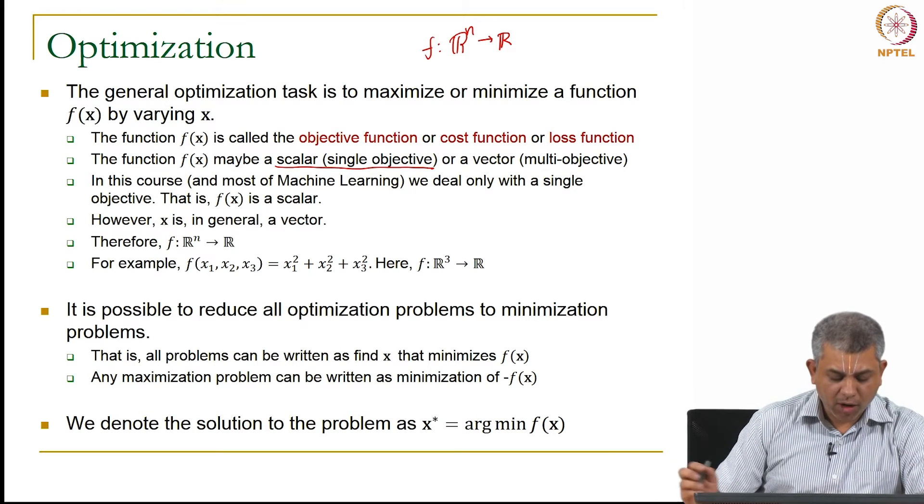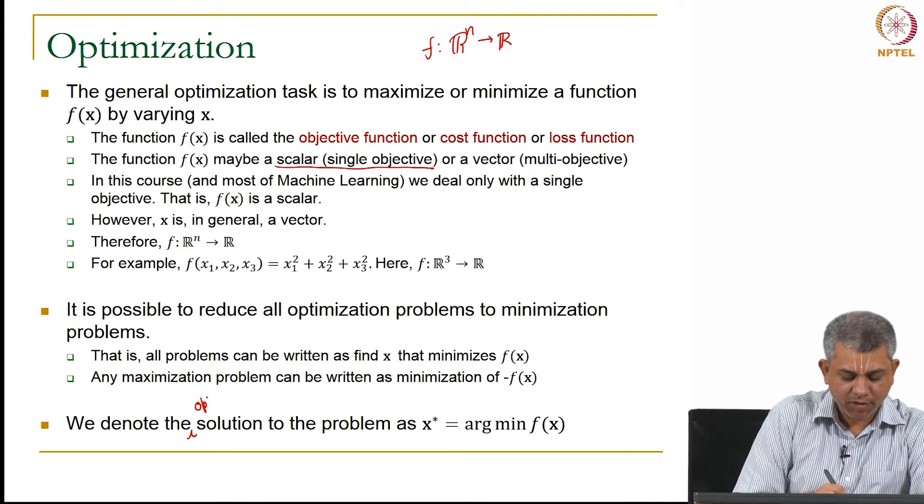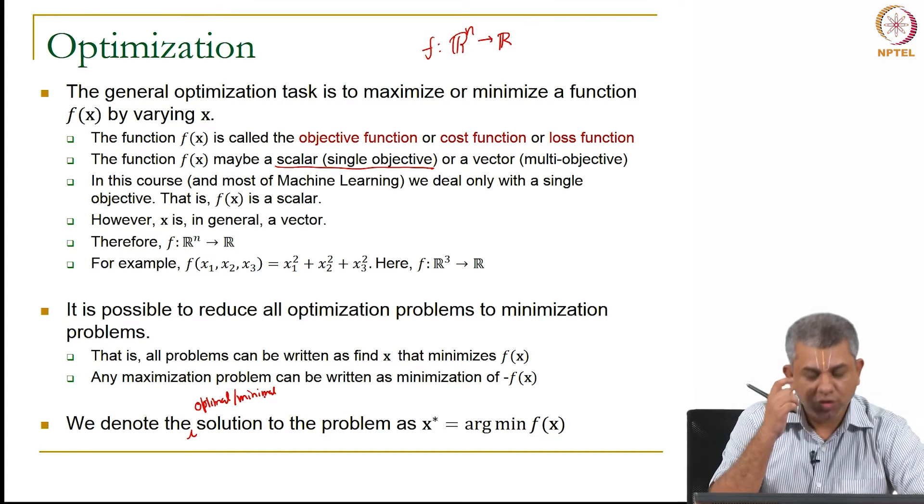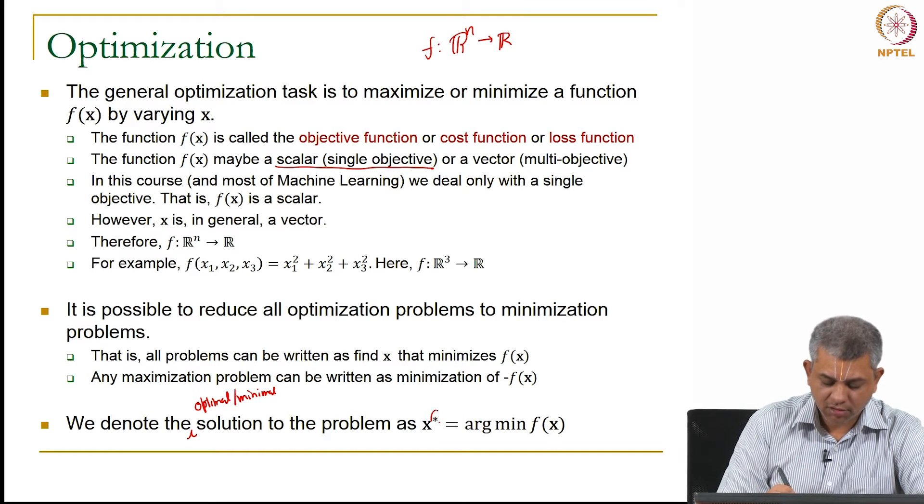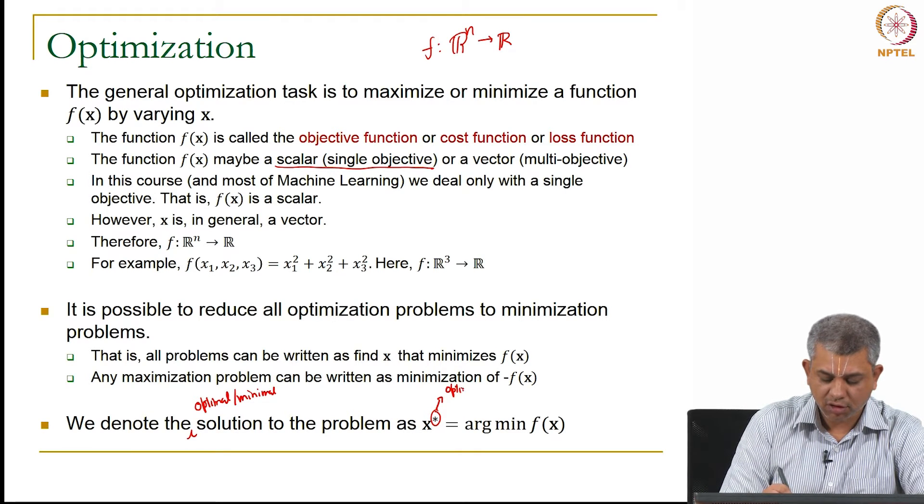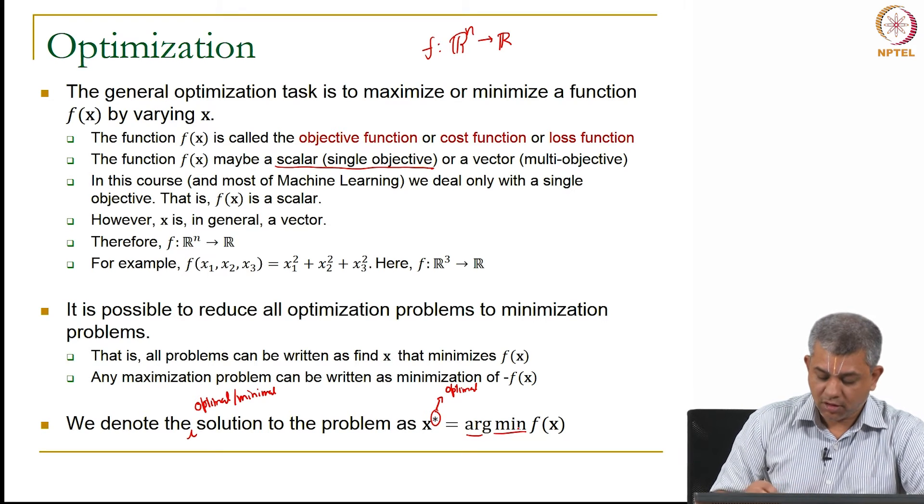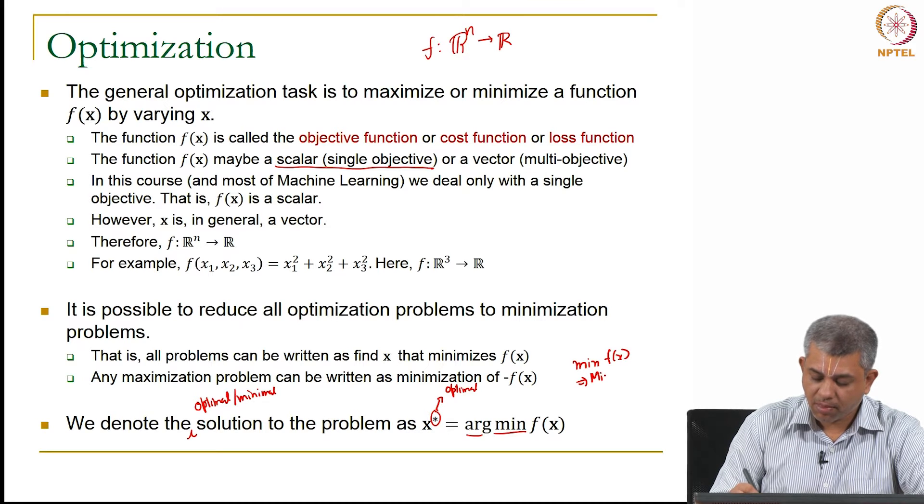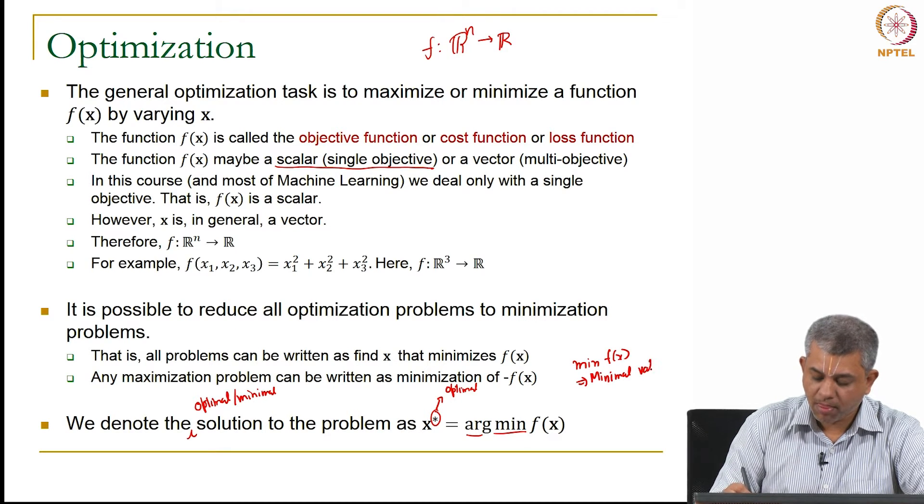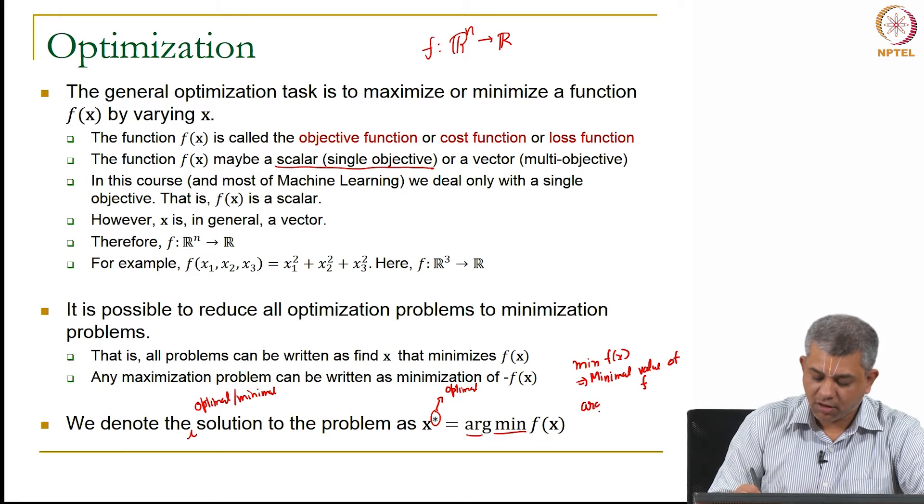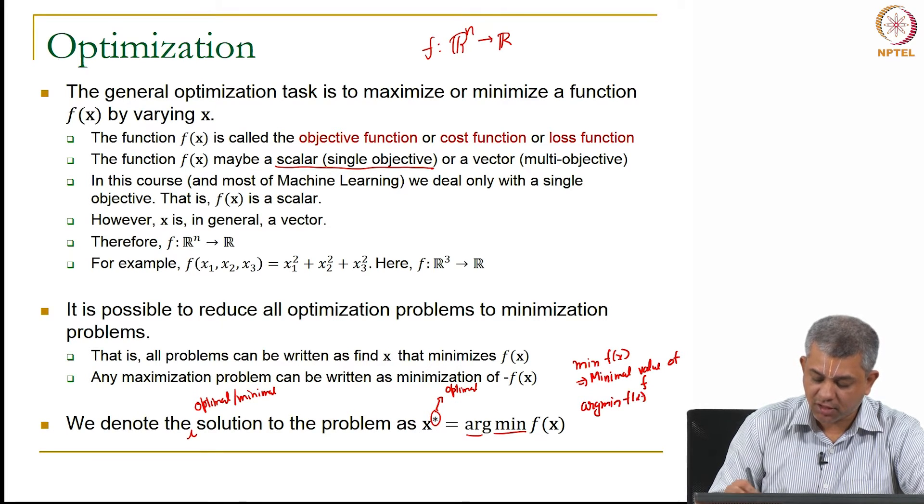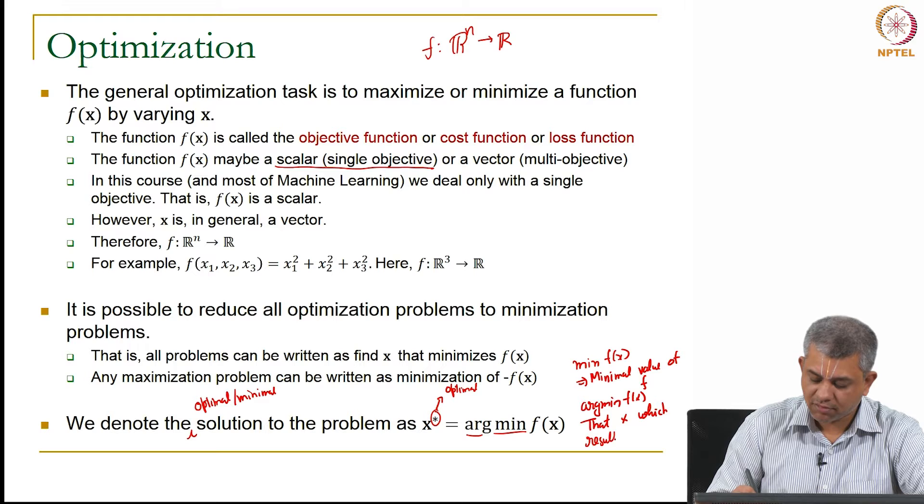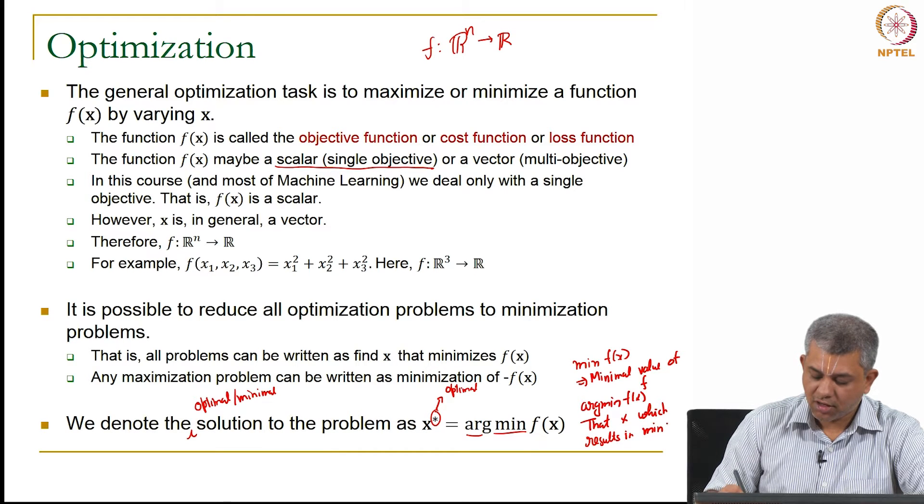Now here is some notation. The optimal solution, let me write the right word, optimal or the minimal, we will be writing that as x star. The star denotes optimal. Now notice the term arg min. Min of f of x would simply mean minimal value of f.